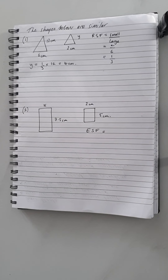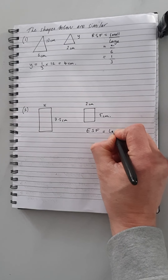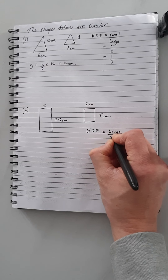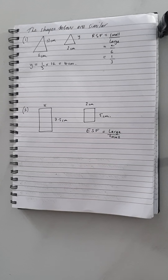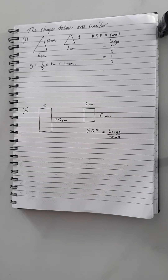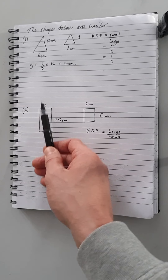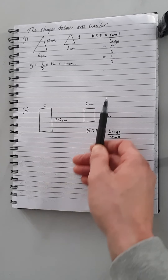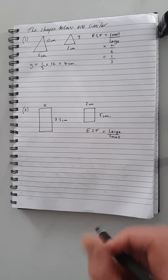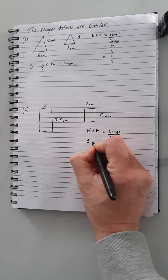The formula for the enlargement scale factor is large over small — big divided by small. That means you take equivalent sides, put the bigger side on top, and divide by the smaller one, because it's an enlargement. Looking for like sides, we have the length of both shapes, so we'll work with the lengths to calculate the ESF.